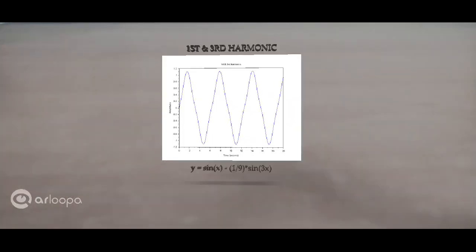Alright, now we have added the third harmonic to the first harmonic. So as you can observe the equation sin(x) minus 1/9 times sin(3x). So sin(3x) is the third harmonic, and this is the first harmonic. Let's keep adding harmonics.